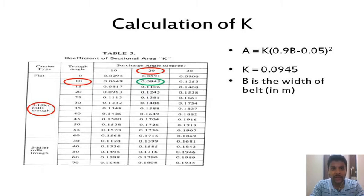The trough angle is 10 degrees, the surcharge angle is 20 degrees. From table number 5, we found that K is equal to 0.0945. If you substitute, you will get the value of A.